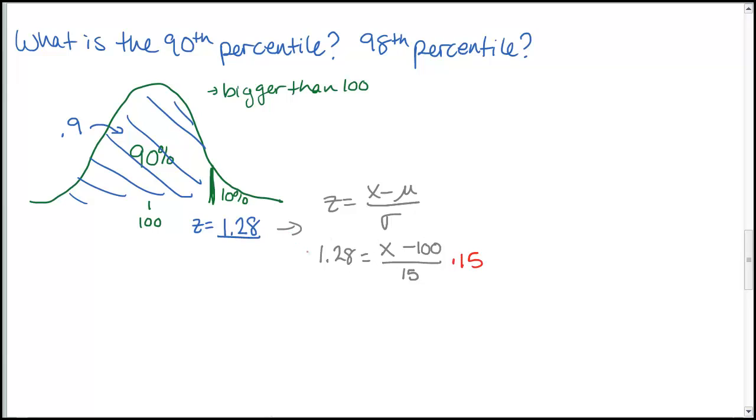So in this case, we'd be multiplying both sides by 15 first. So we get 19.2 equals x minus 100. And then we'd have to add 100 to both sides. So we get an IQ score of 129.7. So if your IQ is 129.7 or maybe we would round to 130, that would make you in the 90th percentile, meaning 90% of people have a lower IQ than you, 10% have one higher than you.